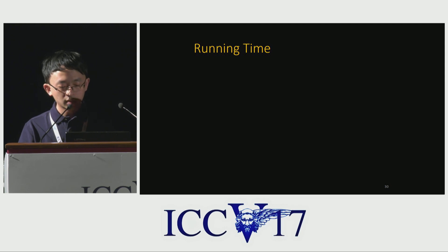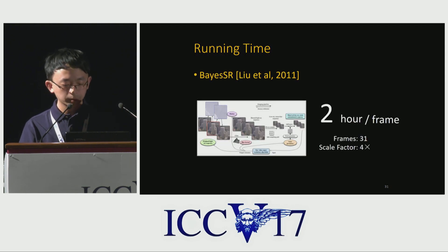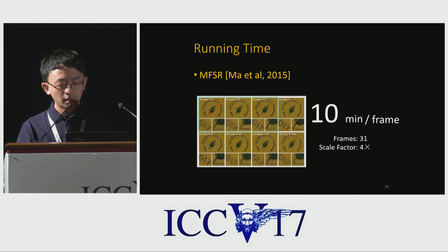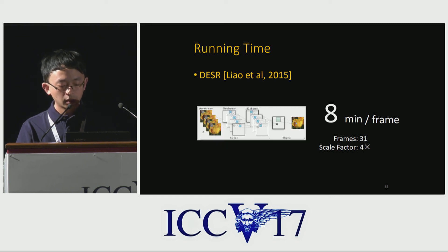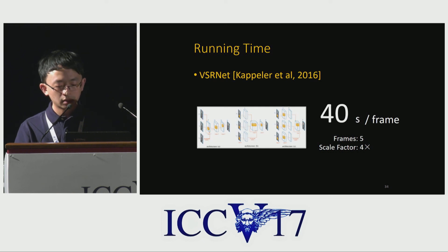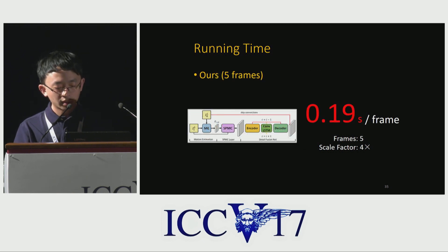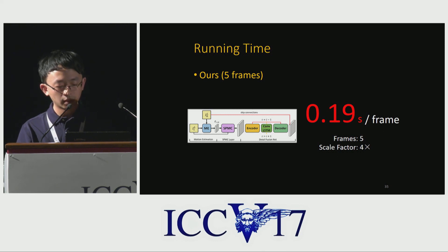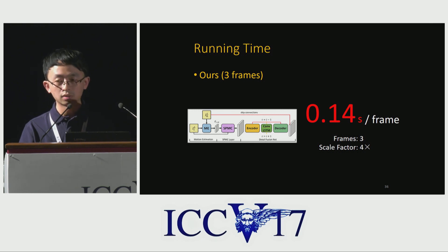We compare running time with most of the current methods. BSN-SR needs two hours to produce one frame as reported in their paper. MFSR requires 10 minutes per frame. Draft-in-sample SR requires eight minutes. VSR net needs 40 seconds per frame. Our framework is much faster since all components can be efficiently computed on GPU — it requires 0.19 seconds using neighboring five frames, and can be further accelerated to 0.14 seconds using three frames.